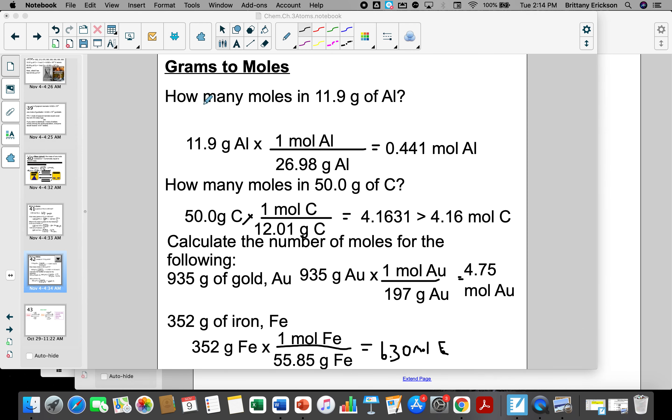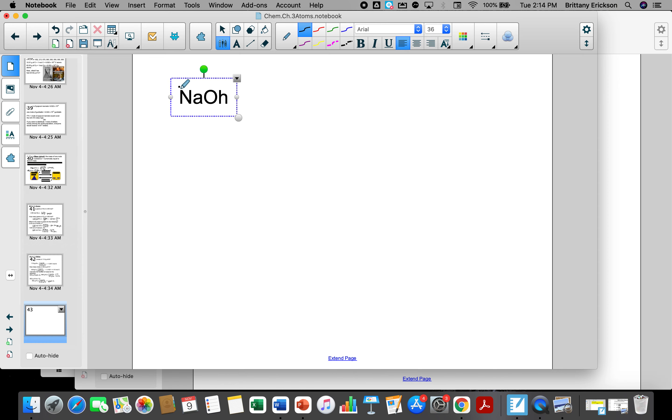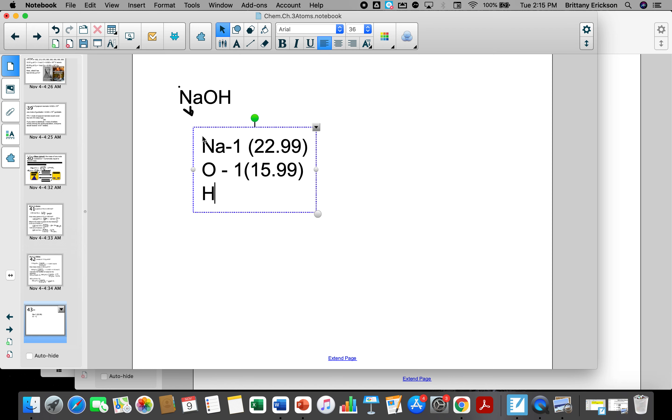So NaOH. You have sodium, you have one of them. And the molar mass of sodium, according to the periodic table, is 22.99. Oxygen, you have one of them. And the molar mass of oxygen is 15.99 or 16. And then we have hydrogen, and you have one of them. And the molar mass of hydrogen is 1.01. So then what you do is you multiply these numbers, and then you add them all up. So 1 times 22.99 plus 1 times 15.99 plus 1 times 1.01. 22.99 plus 15.99 plus 1.01. And I get 39.99 grams per mole. So that would be your answer for number 1.